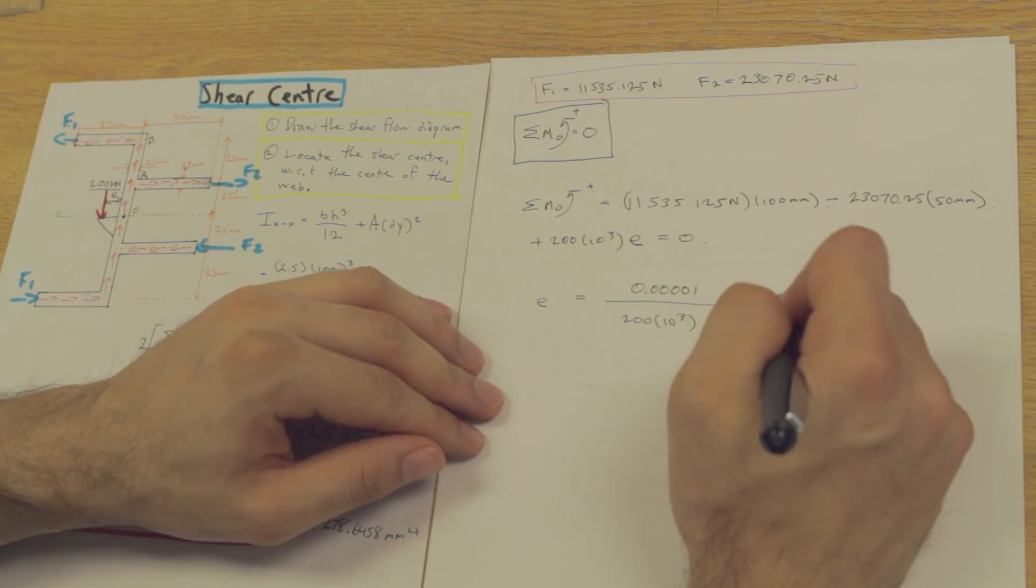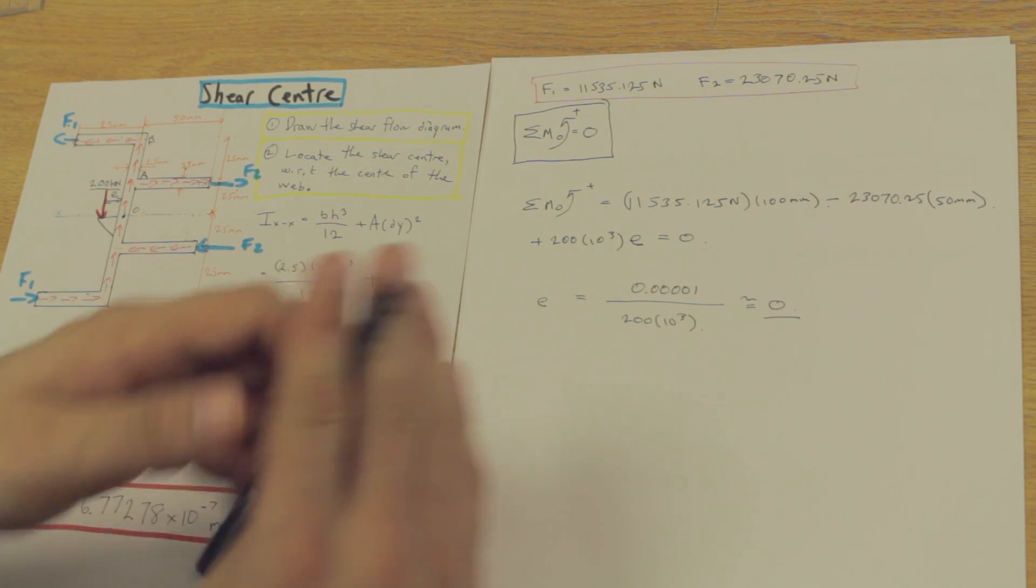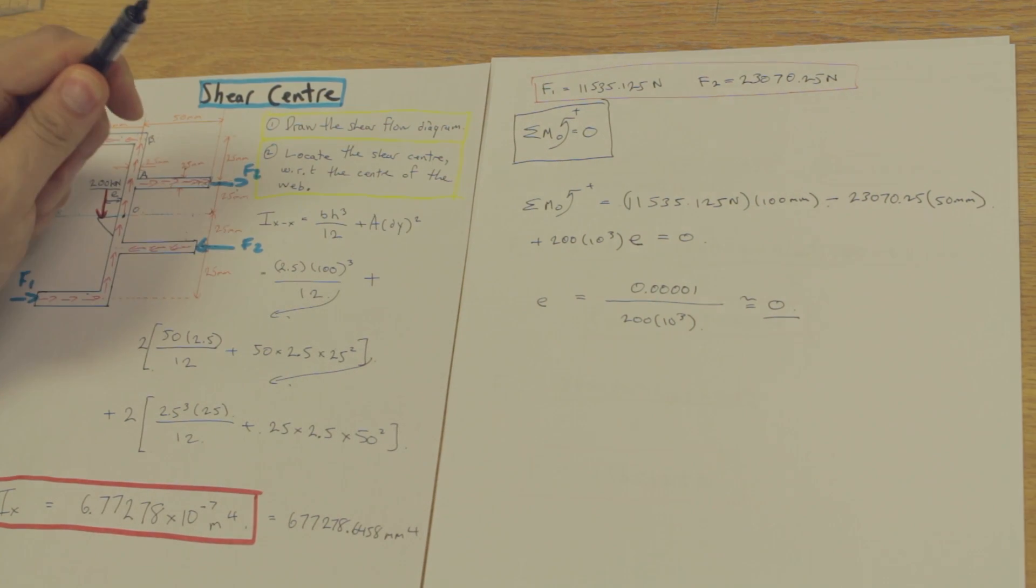So as a result of that, we can say that the shear center is roughly zero, or the value of E is roughly zero.